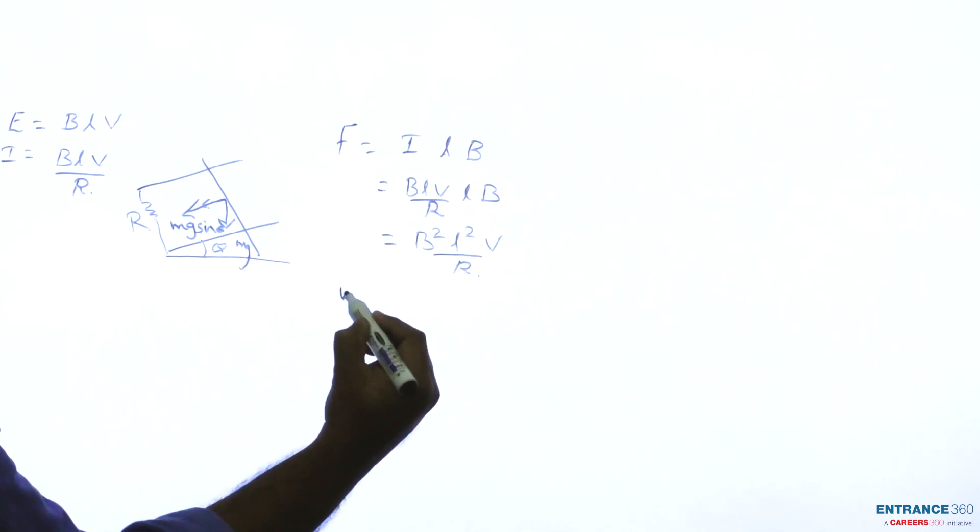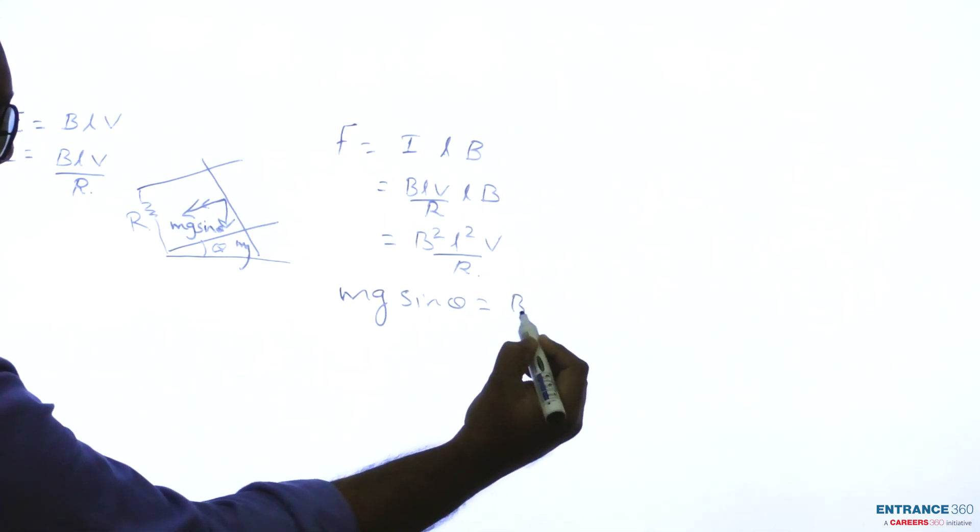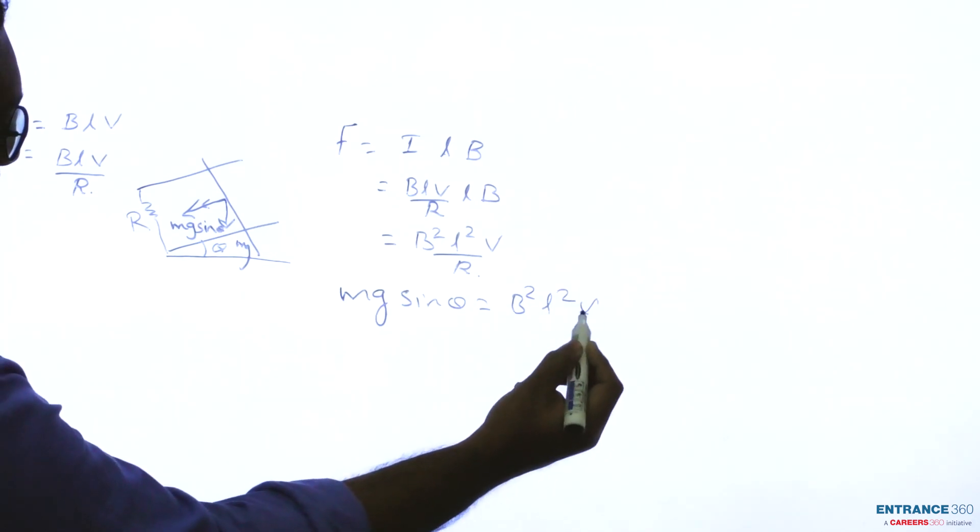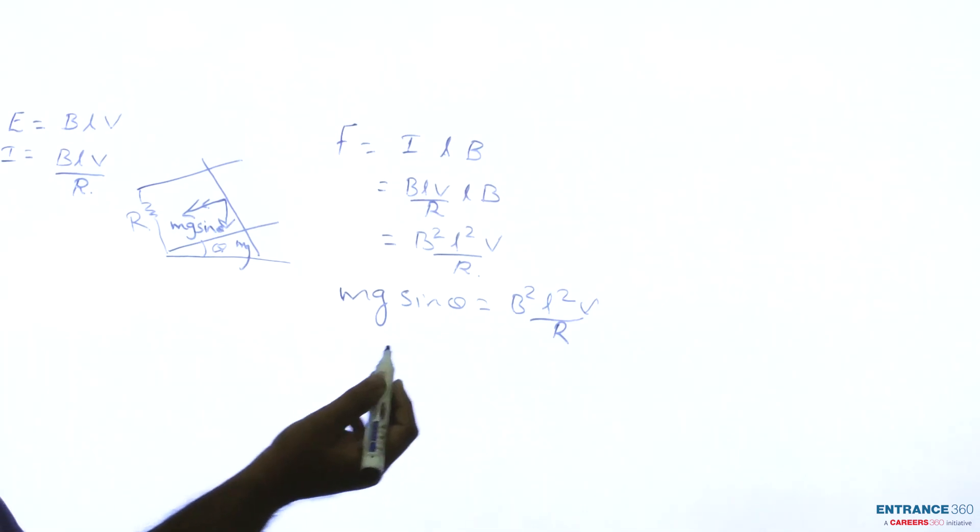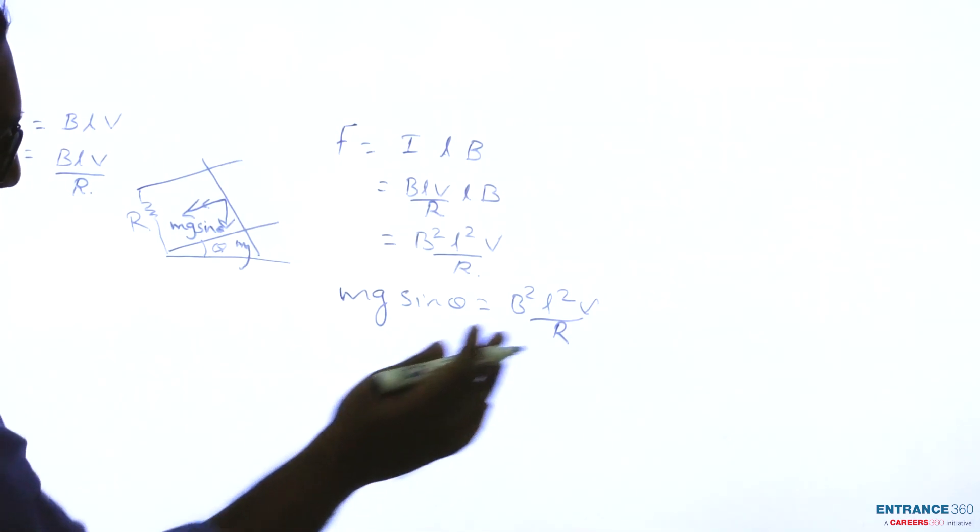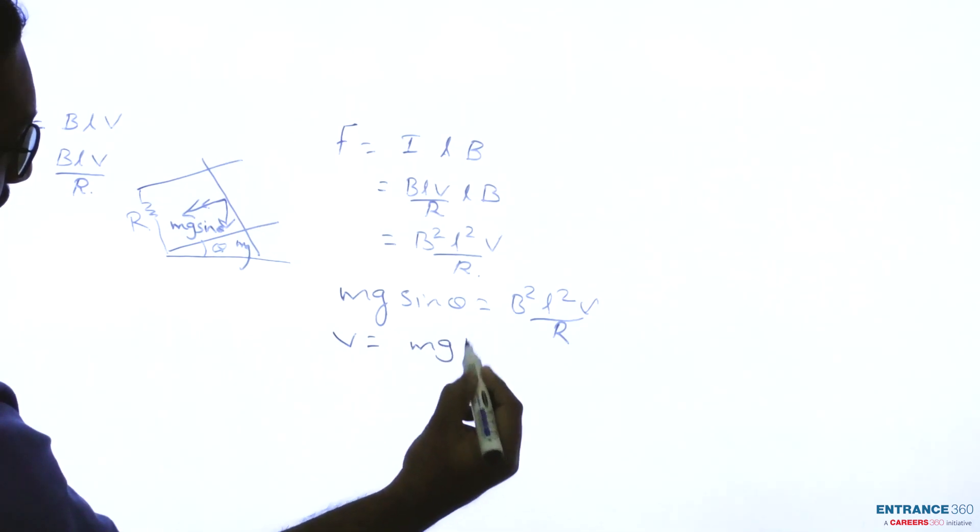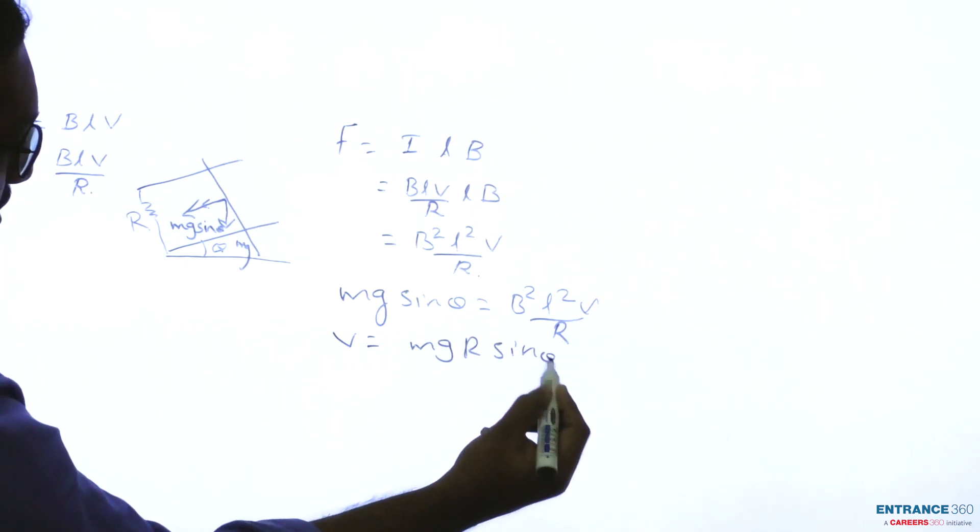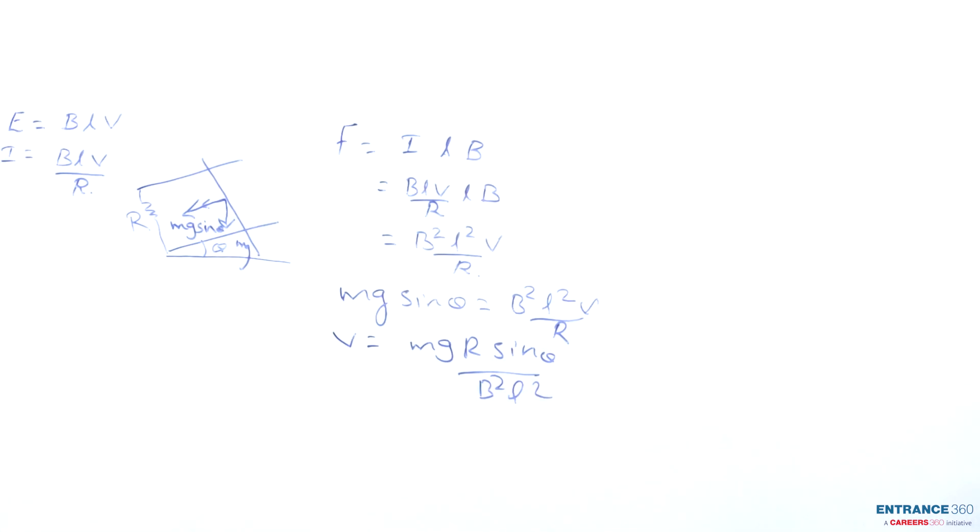So we can equate Mg sin theta equal to B squared L squared V by R. This rod is moving due to gravity; no external force is applied. So we can write V equal to MgR sin theta by B squared L squared. So our final answer is MgR sin theta by B squared L squared.